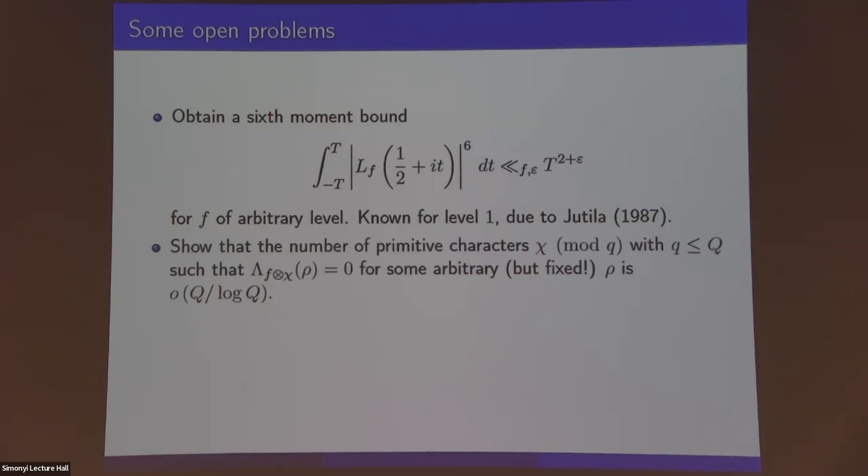More interestingly, along the argument, the new input for the case of general level is certain zero-density estimates. Along the argument, you need to rule out a situation of this form. You need to rule out a high degree of vanishing for a bunch of twists, character twists, of your form at a fixed point rho. I don't know how to do anything better than using zero-density for rho here, so I can get this result if the real part of rho is at least 7 over 9. But it would be nice to actually use the fact that this is the same rho. That's something that would also improve some of the results that I presented.